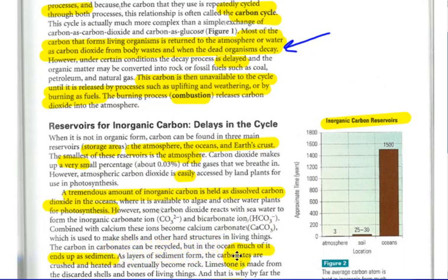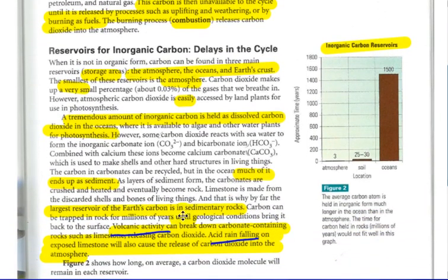The carbon and carbonates can be recycled, but the ocean has much of it as sediments on the bottom of the ocean. As layers of sediments form, the carbonates are crushed and heated and eventually become rock. Limestone is made from discarded shells and bones of living things, and that is why, by far, the largest reservoir of Earth's carbon is in the rock itself. Because it took that CO2 from the water, converted it into carbonate ion, combined it with calcium, and then made the rock.